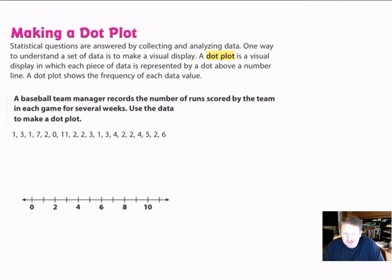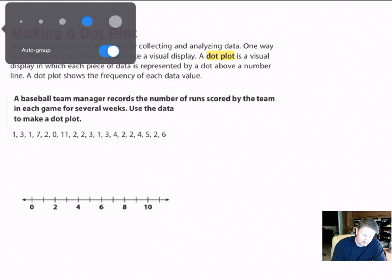All right, so we can take some of this data that is a statistical question, and we can display it in what we call a dot plot. And that gives us a visual on how the data is spread out. Statistical questions are answered by collecting and analyzing data. One way to understand a set of data is to make a visual display. A dot plot is a visual display in which each piece of data is represented by a dot above a number line. The dot plot shows the frequency for each data value. So I'm going to give you an example of what this looks like.